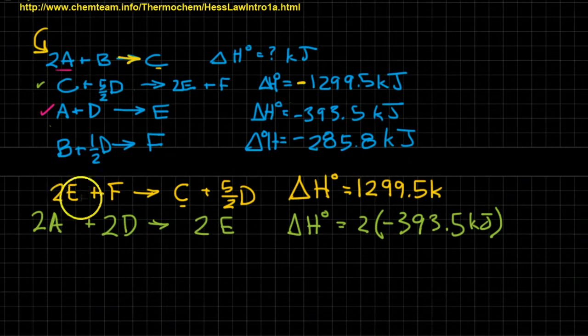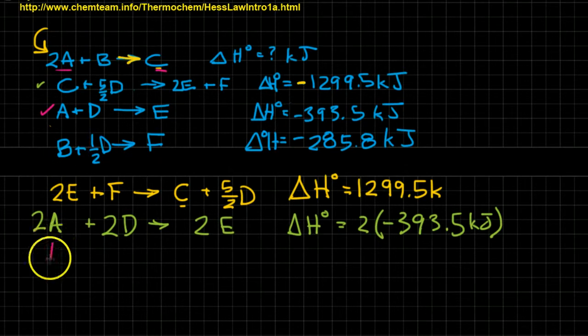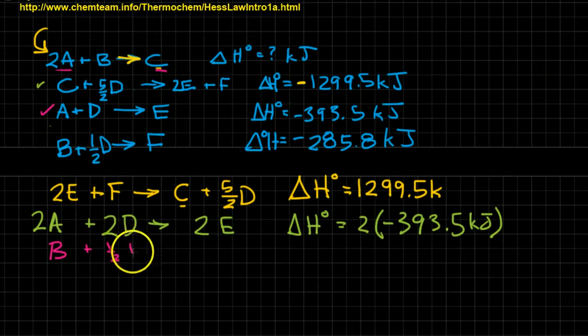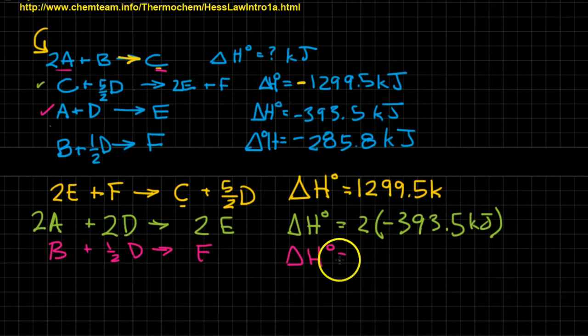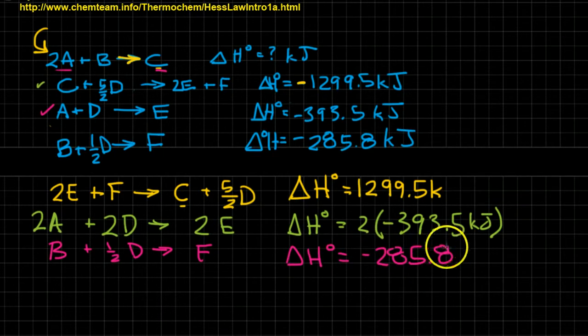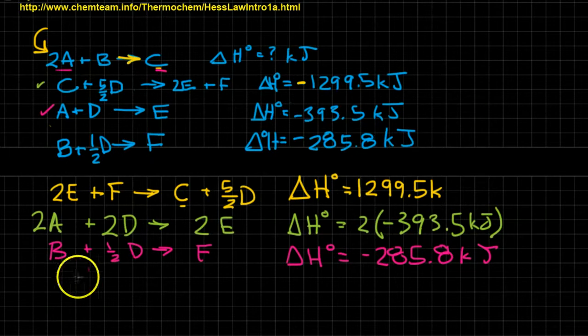So I've got my A's, so that's good. This is good. I need a B. And I'll just take that straight from here. So I'll pull this down just to make it easier to work. B plus one half D yields F. And that reaction, I guess I could have just copied it, 285.8. And with that in place, I think we're ready to do some cancellation and maybe just see what adds through.